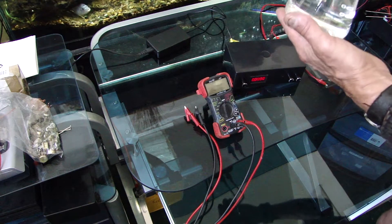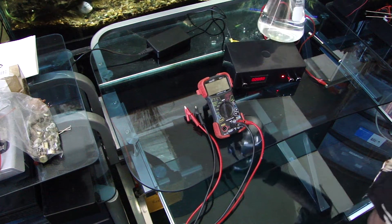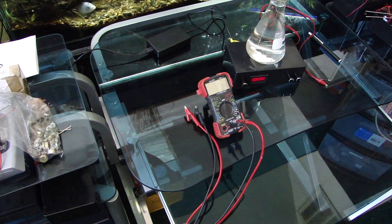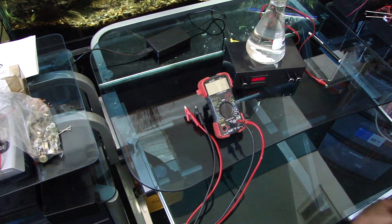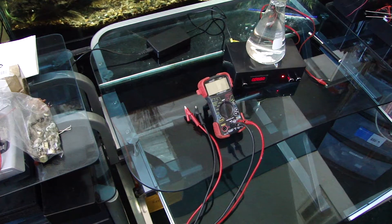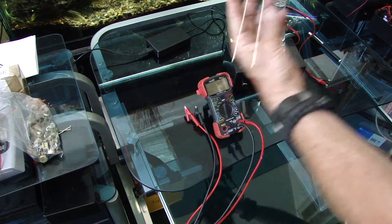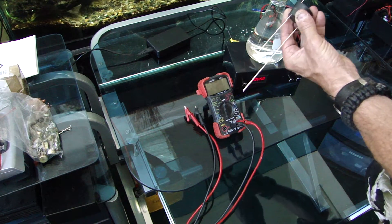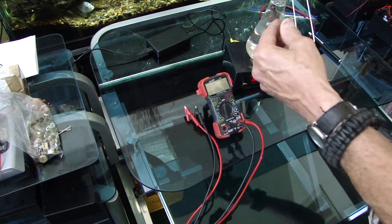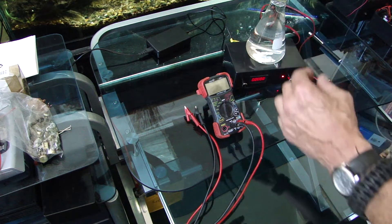We already have our Erlenmeyer flask. You can use any flask you want, but this comes with a kit. All this stuff comes with a kit. We need a stir bar. So let's get a stir bar for this. We're going to drop our stir bar in. Then we're going to insert our silver rods into the stopper. It's got two holes on it. Then we're going to straighten out the rods parallel, so they're about this far apart.